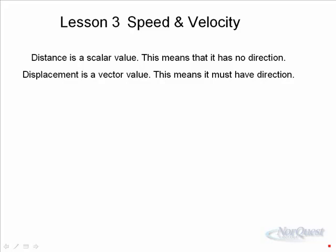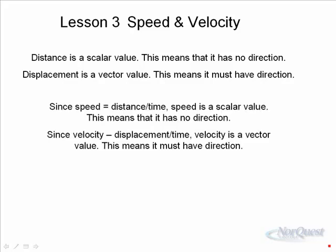Since speed equals distance over time, then speed is a scalar value as well. So speed and distance are scalars. Whereas, velocity and displacement are vectors. That means it must have direction.